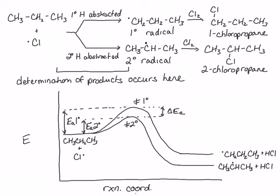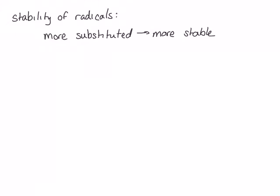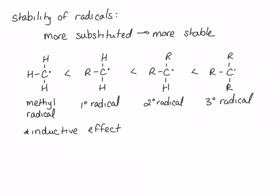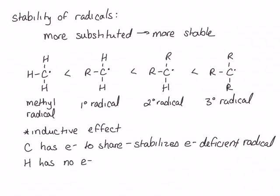Why is the secondary radical more stable than the primary radical? In general, the trend for the stability of radicals is that a more substituted radical is a more stable radical. A methyl radical is the least stable; replacing one hydrogen with a carbon to make a primary radical makes it more stable; a secondary radical is even more stable; and the most stable radical will be tertiary. The reason for this trend is the inductive effect — radicals are electron-deficient species, and carbons stabilize the electron-deficient radical center better than hydrogens. As we replace hydrogens with carbons around the radical center, the radical becomes more stable.